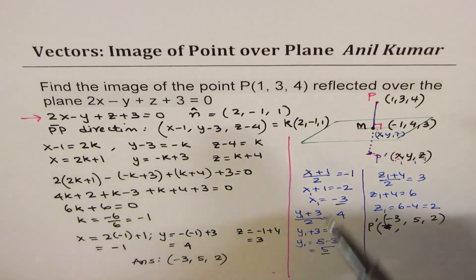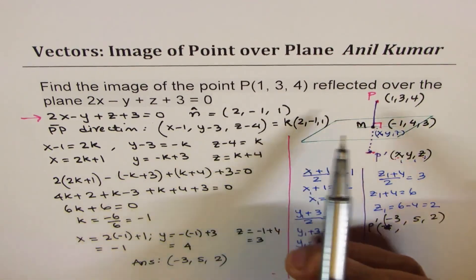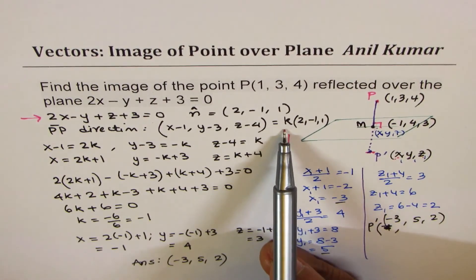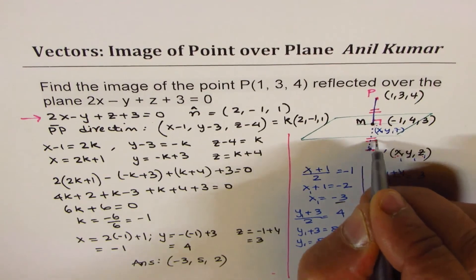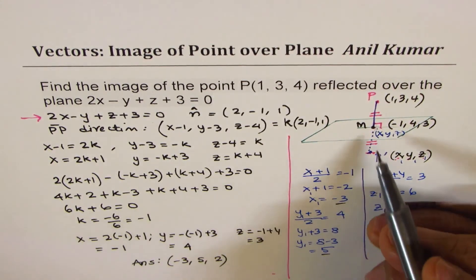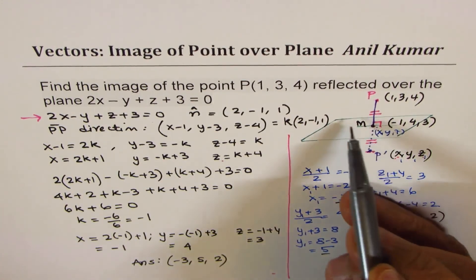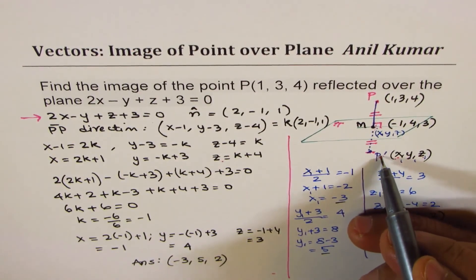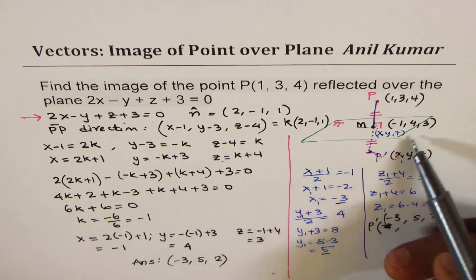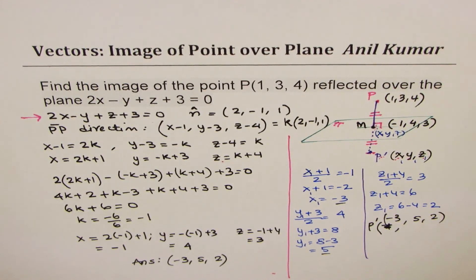The steps involved in such questions are: first, recognize that line PP' is parallel to the normal, so they are scalar multiples with factor k. Then find the point of intersection M on the plane using the parametric x, y, z values substituted into the plane equation. M is the midpoint of P and P'. Finally, use the midpoint formula with the given point P and midpoint M to find the image P'. I hope that helps — thanks for watching and all the best.